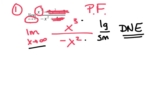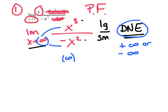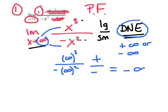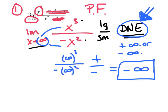The AP is going to want you to go further — they don't like 'does not exist' as an answer. They'll give you positive or negative infinity, and you've got to determine which one. When you get 'does not exist,' substitute infinity in. So: infinity cubed over negative infinity squared. Cubing infinity gives a positive; squaring infinity and making it negative gives a negative. So the answer is negative infinity.